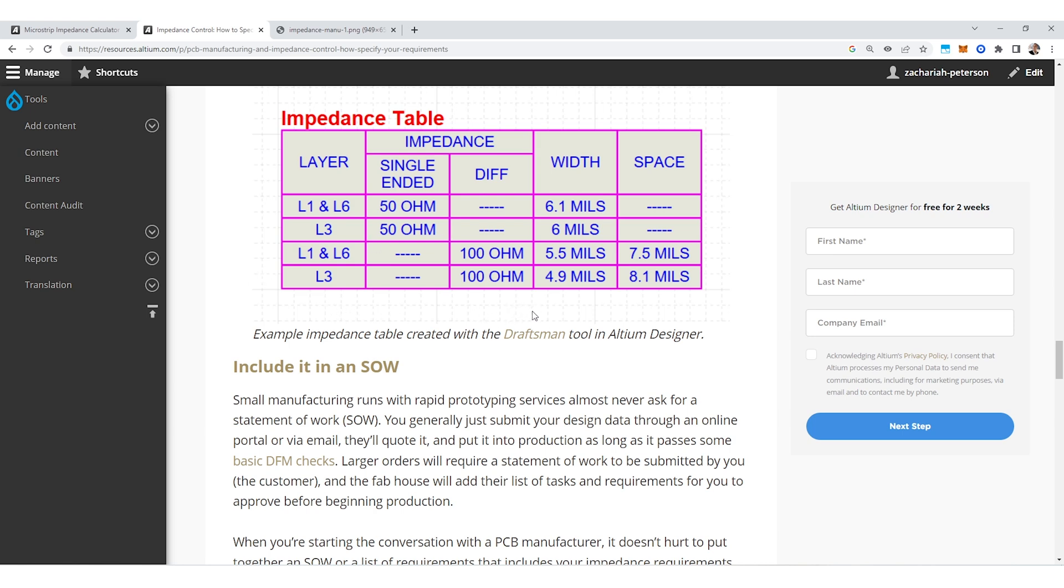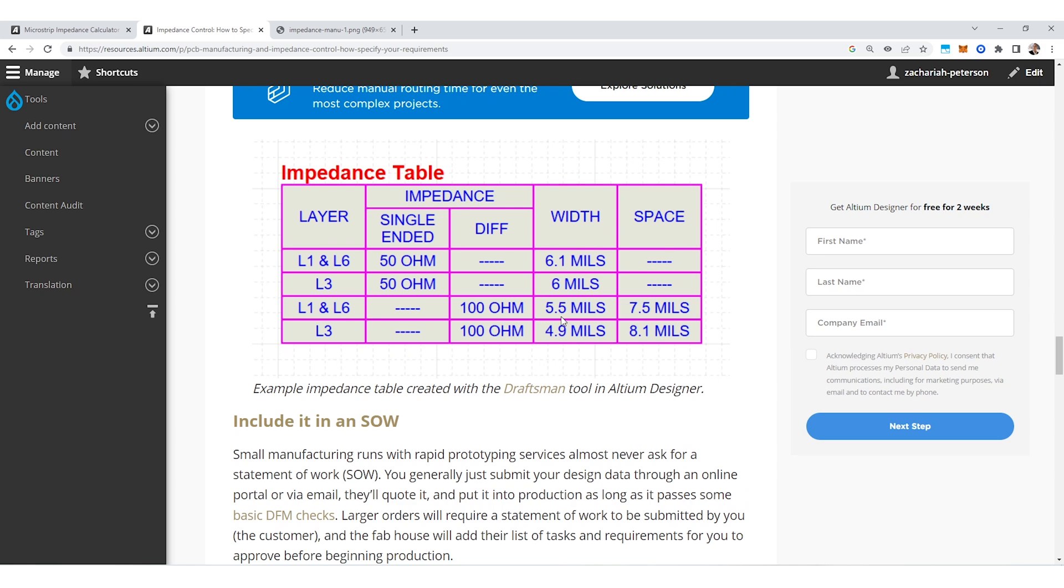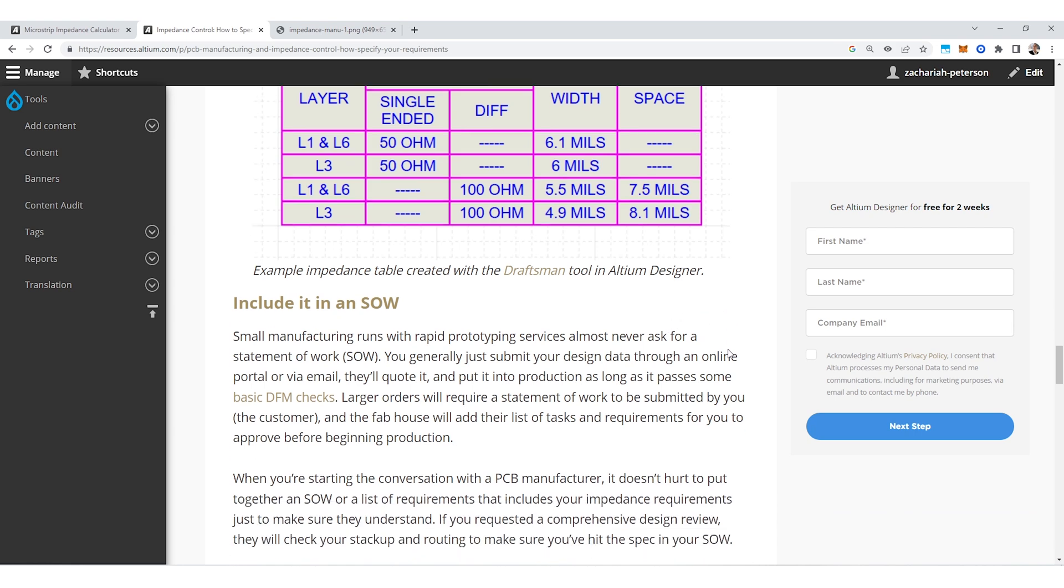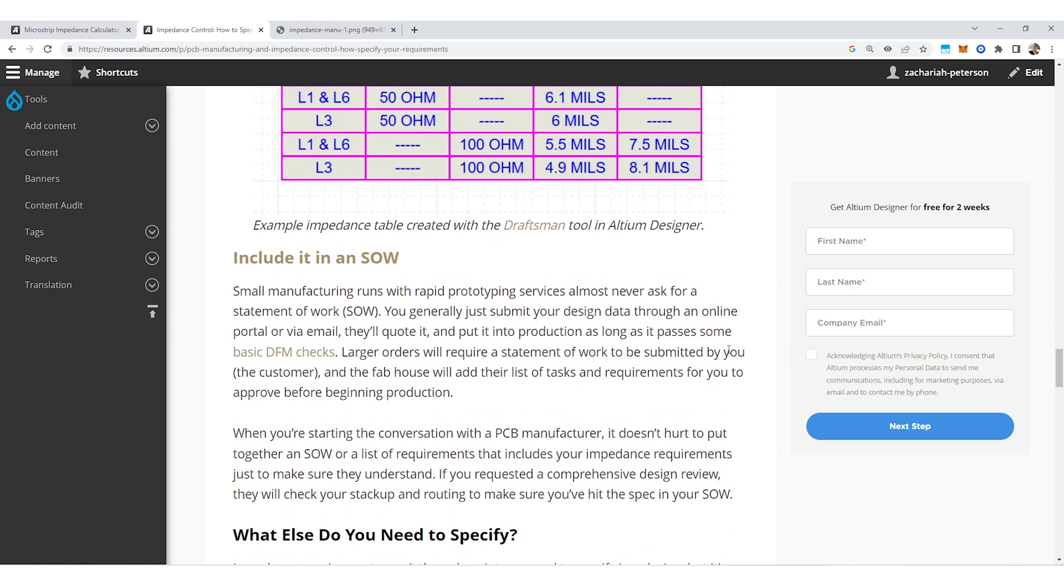Both of these images, the stack-up image and then the impedance table, those can be created inside of Draftsmen. So if you're an Altium user you've got access to the Draftsmen tool, go check it out because it really nicely automates creation of all of these different features in your fabrication drawing.